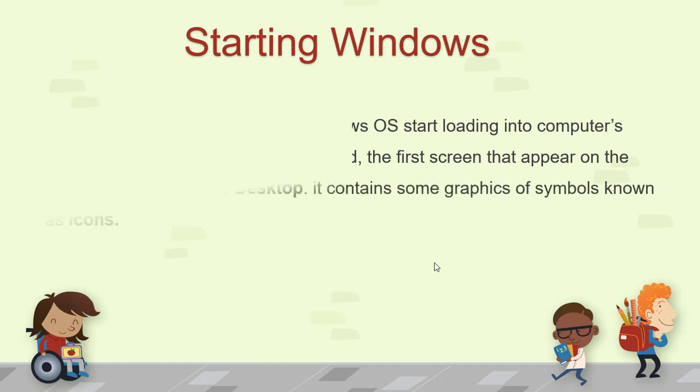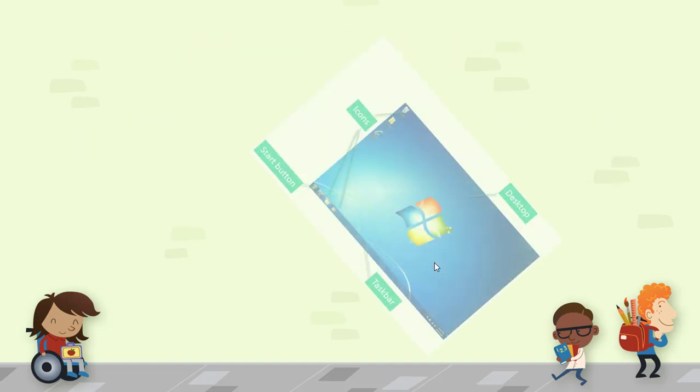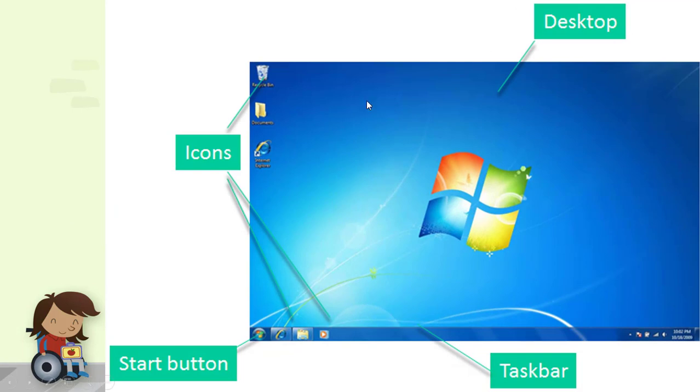Now, how can we start Windows? When we switch on a computer, the Windows operating system starts loading into the computer's memory. Once the process is completed, the first screen that appears on the monitor is known as the desktop. It contains graphic symbols known as icons. In this image you can see the icons, the Start button, and the taskbar at the bottom.